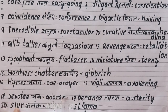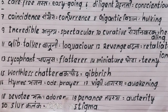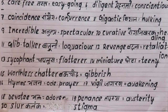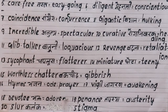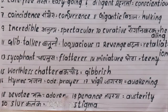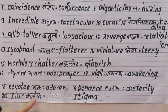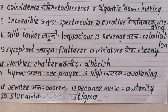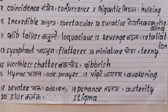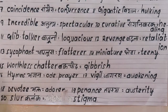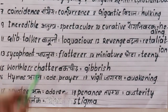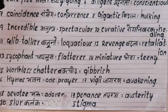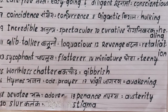Twentieth is 'slur', meaning a mark of disgrace or dishonour. The synonym is 'stigma'. For example: you are a slur — you are a stigma. These are all 20 words of Part Two.